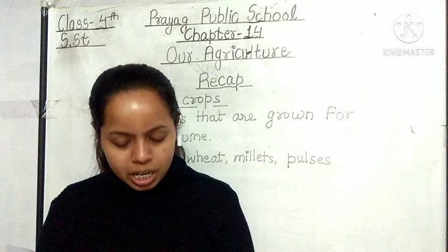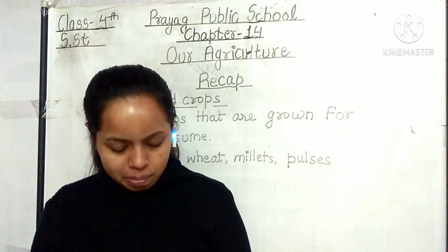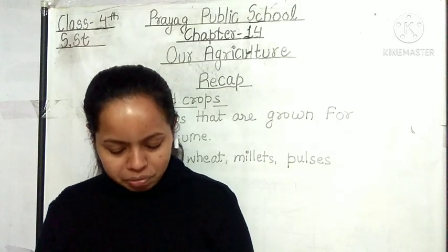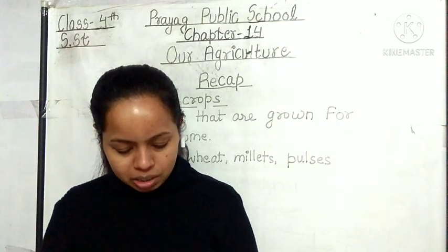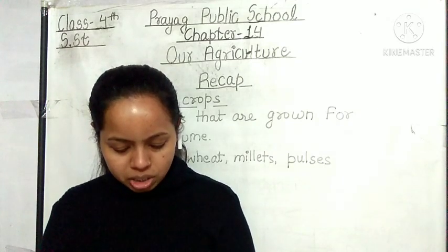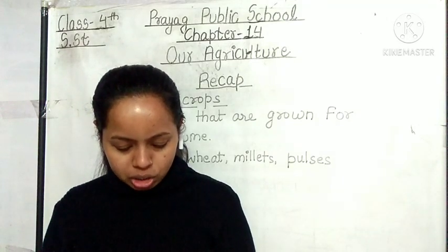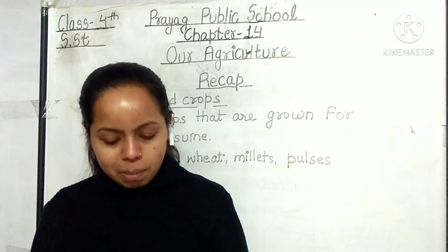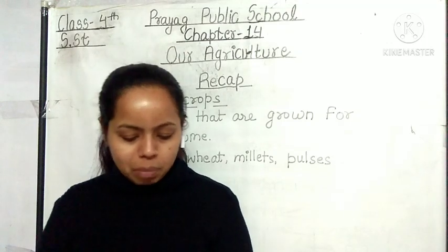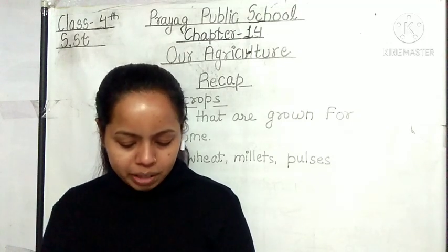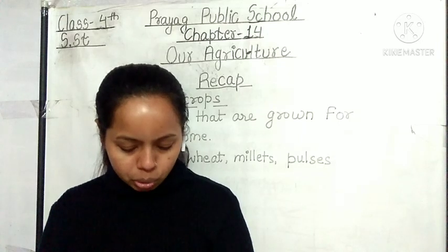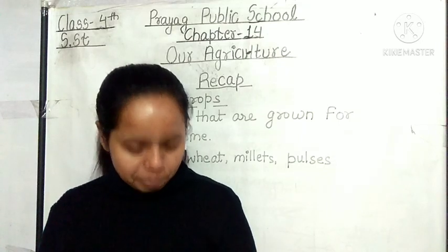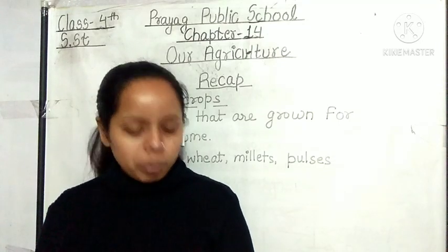Students, you can see in the map of India the references for different crops — map mein aap dekh sakte hain jaise maize, tea, coffee, cotton, jute — Bharat ke map mein aap dekh sakte hain yahan par yeh different types ki crops grow ki jati hain.